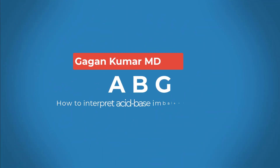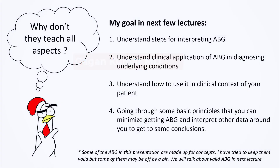Hello everyone. Today we will be talking about arterial blood gas and how to interpret the acid-base imbalance. My goal in the next few lectures is to understand the steps for interpreting an arterial blood gas, understanding the clinical application and diagnosing underlying conditions, and how to use it in the clinical context of your patients. We will also go through some basic principles so you can minimize getting ABG and interpret other data to reach similar conclusions.